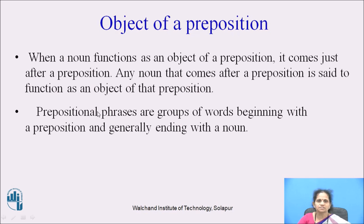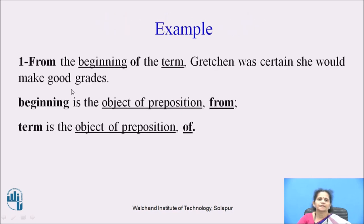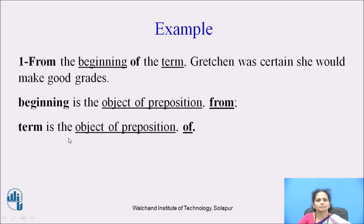Object of a preposition. When a noun functions as an object of a preposition, it comes just after a preposition. Any noun that comes after a preposition is said to function as an object of that preposition. Prepositional phrases are groups of words beginning with a preposition and generally ending with a noun. In the example: From the beginning of the term, Gretchen was certain she would make good grades — beginning is the object of preposition from, and term is the object of preposition of.